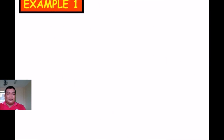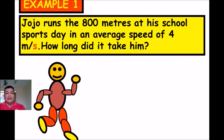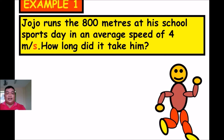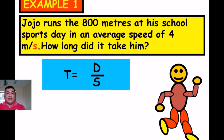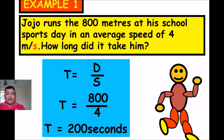Example 1: Juju runs 800 meters on sports day at an average speed of 4 meters per second. How long did it take? To find time, use T = D ÷ S. Distance is 800 meters and speed is 4 meters per second. Cancel out the meters. Divide 800 ÷ 4 = 200 seconds.